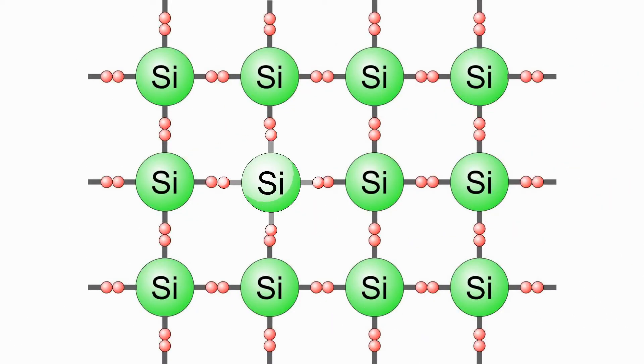If we start again with our intrinsic silicon structure and again remove one of the silicon atoms, but this time replace it with a boron atom that has three electrons in its valence band, we get something different. The three boron electrons form bonds with the electrons in the silicon structure. Silicon, though, still wants four electrons to complete the four bonds. In effect, it has a hole that would like to accept an electron if one were available.